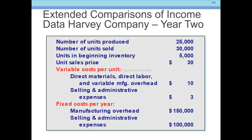Extended comparisons of income data — Year 2. Assume in Year 2 the number of units produced is the same as in Year 1. The number of units produced remains the same, but we will compare the results under both costing methods.